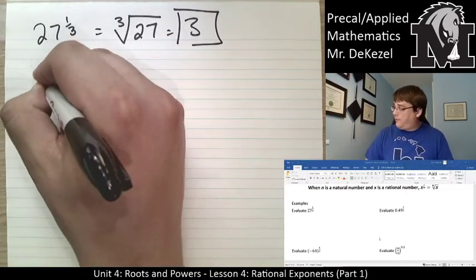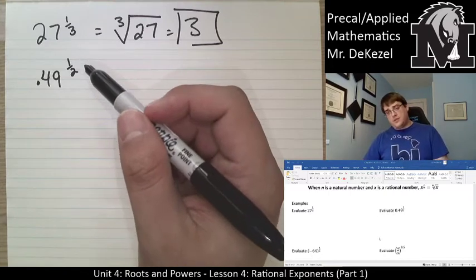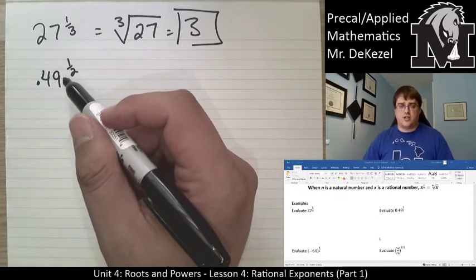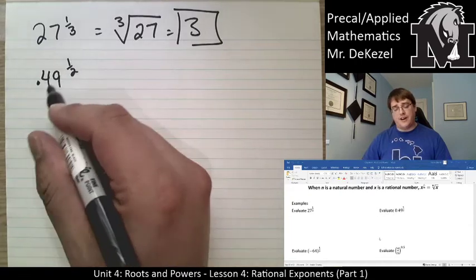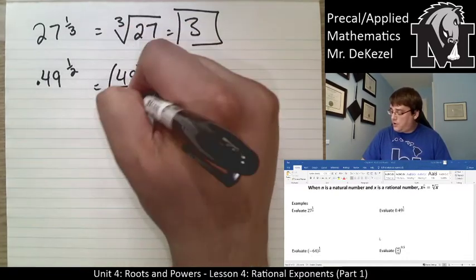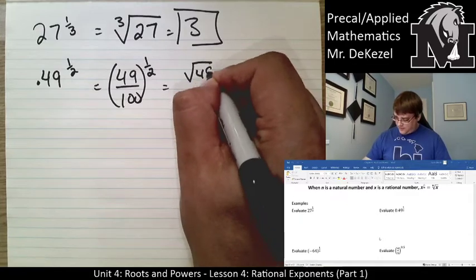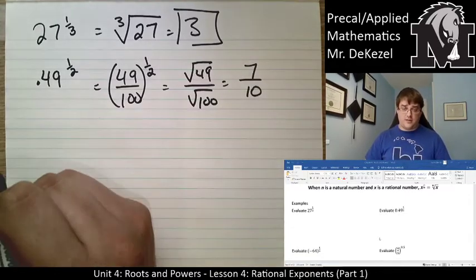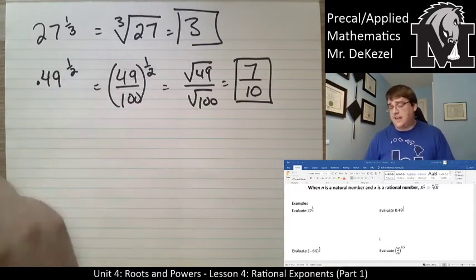If we have 0.49 to the power of a half — we do not like decimals anymore. We're going to turn this decimal into a fraction. We move the decimal over two places to make this 49, then put it over 100. 49 divided by 100 is the same as 0.49, so we're left with 49 over 100, all to the power of a half. The half means it's a square root, so we write this as the root of 49 over the root of 100. We know both of those — that's seven out of ten. So 0.49 to the power of a half is actually seven tenths.